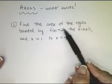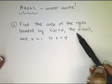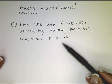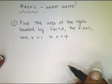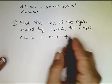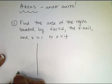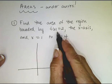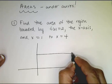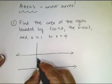So find the area of the region bounded by f(x) equals 2, the x-axis, and x equals 1 to x equals 4. What you're going to want to do is sketch this region and see if you can answer the question based on things you already know. So f(x) equals 2 is the constant function that passes through 0, 2.